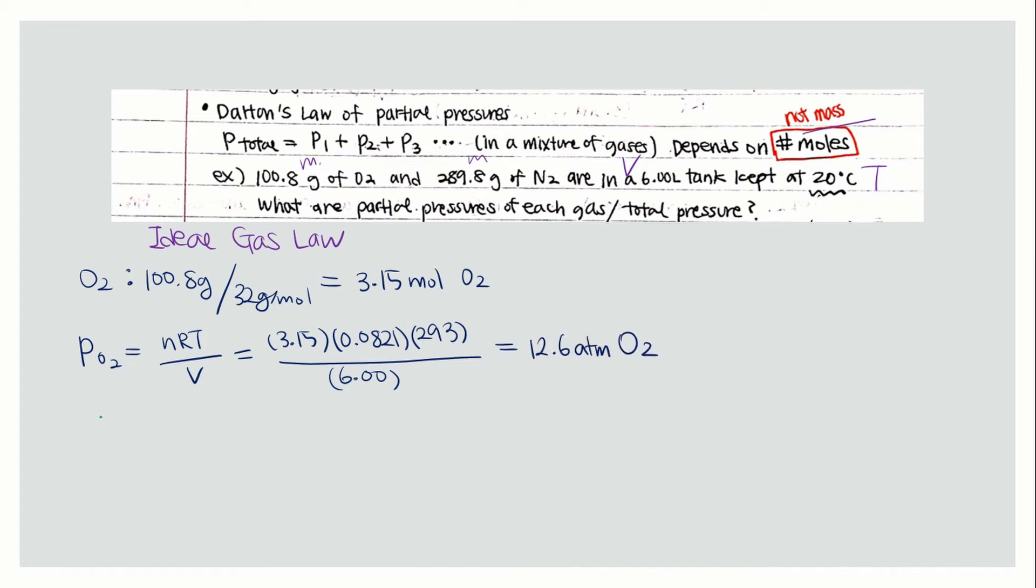Now find the partial pressure for nitrogen. First, find the moles by dividing the mass by the molar mass, 28 grams per mole, which equals 10.34 moles.